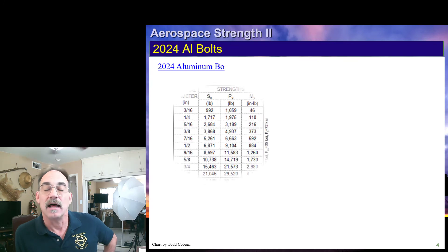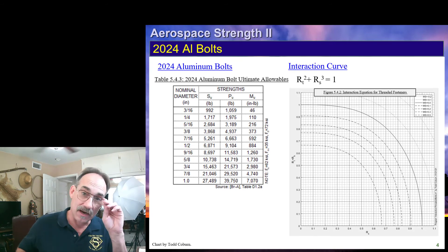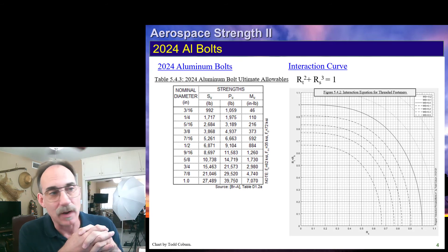If we have an aluminum bolt like these here, then this would be our allowable. And since it's a threaded fastener, we use the threaded fastener interaction equation again.